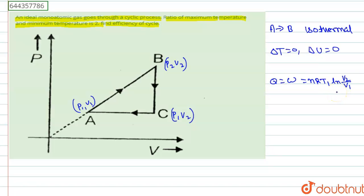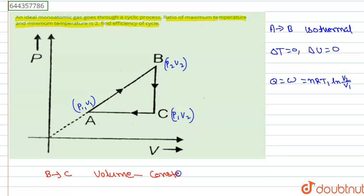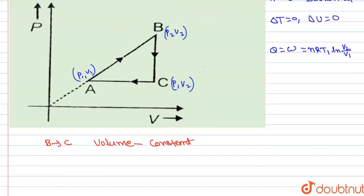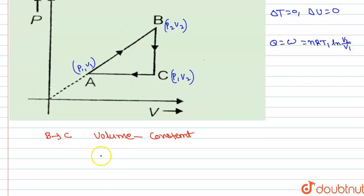In the B-C process, we can see that volume is constant. So in the B-C process, volume is constant, which means work done is equal to 0. Q is equal to ΔU, and this is equal to NCV·ΔT.